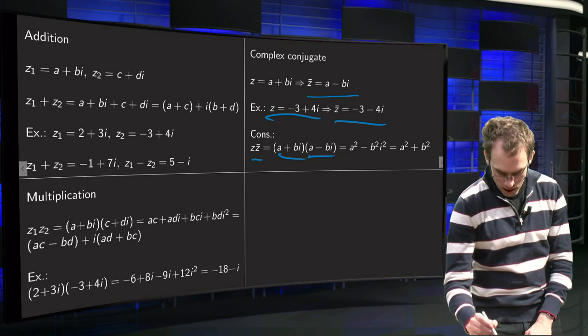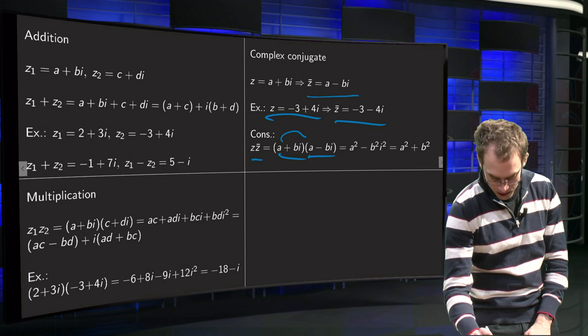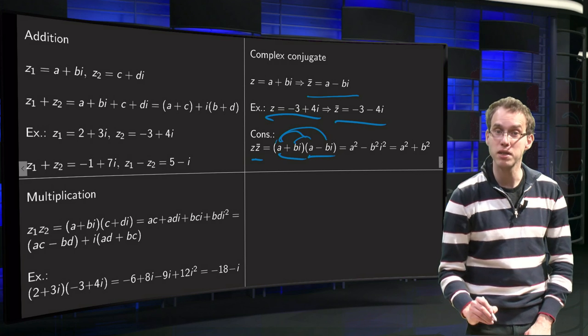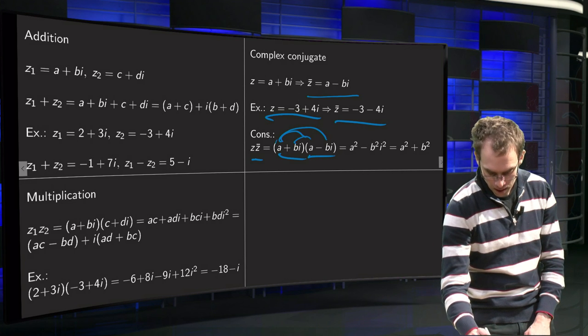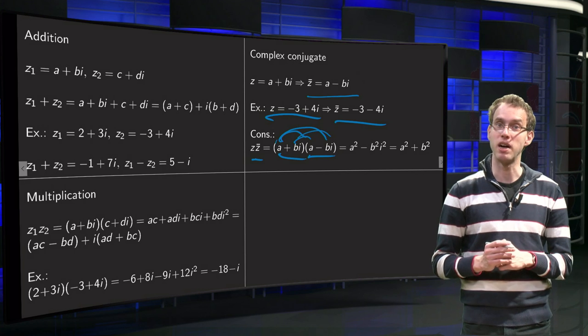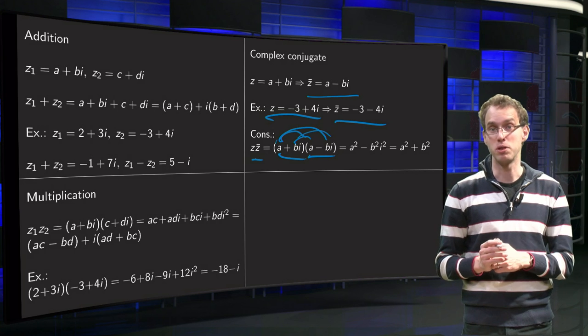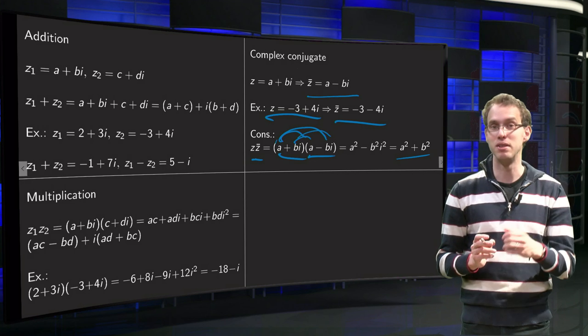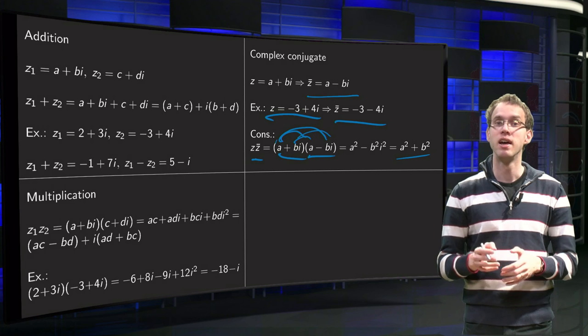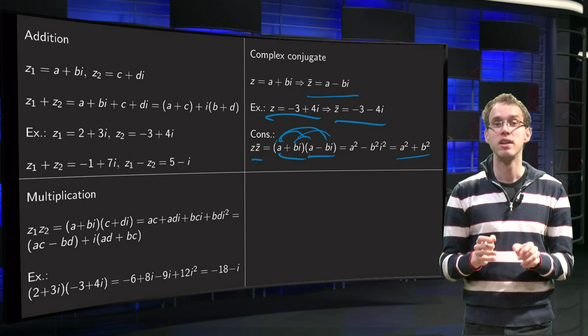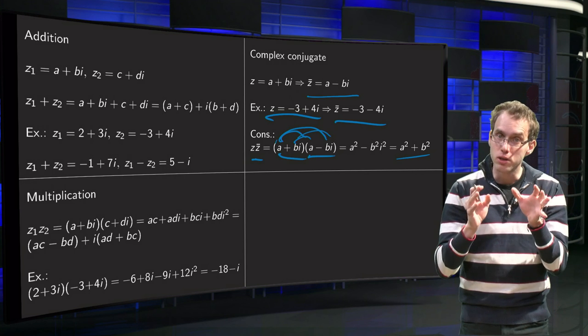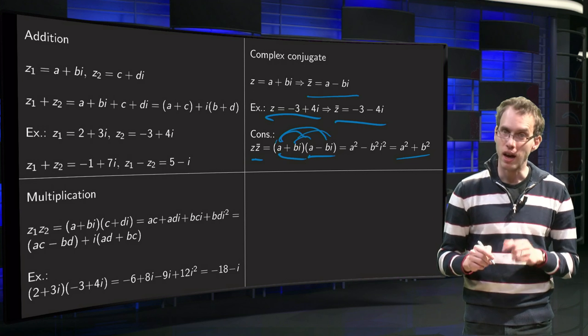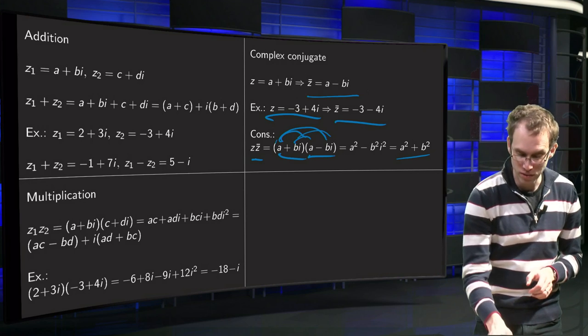So z times z̄ gives you (a + bi)(a - bi). You get a² - abi + abi, so those cancel out, minus b²i². But i² equals -1, so we get a² + b². So even though z and z̄ are both complex, their product is just a positive real number a² + b². And this little trick will allow us to do division.